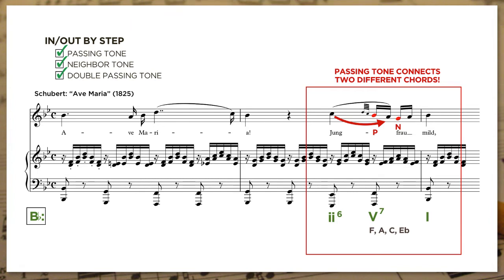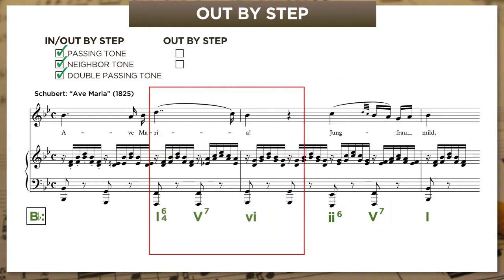Let's change gears and look at non-chord tones that require only one stepwise move—the motion out. Focusing on the last two chords of bar I moving into bar II, we have a common progression: I-6-4 to V-7 to VI. When we reach the I-6-4 chord, spelled Bb, D, and F, the soprano has chord tone D. But she holds that chord tone well into beat four, only moving after the chord has changed.